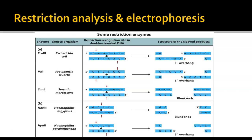Some restriction sites produce sticky ends when an enzyme cuts there, leaving groups of unpaired bases at one end, while others produce blunt ends without unpaired bases. Sticky ends can be two, three, or four bases long. Some enzymes, like HAE3 and SMA1, cut with blunt ends. Blunt-end cuts are useful for cutting DNA into pieces for analysis, but they would not be useful for inserting a gene into a plasmid.